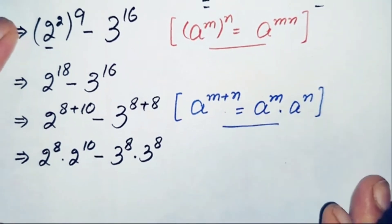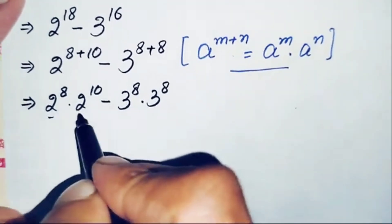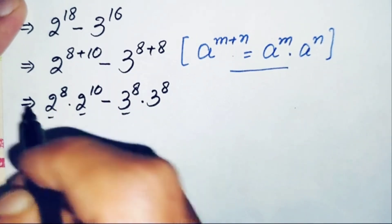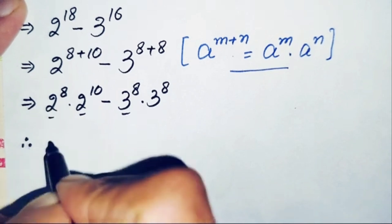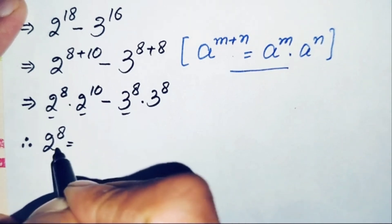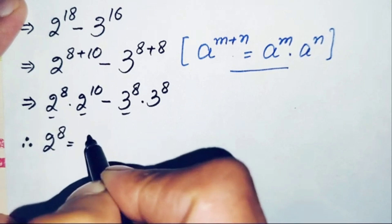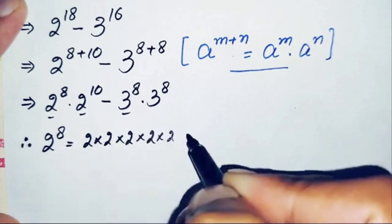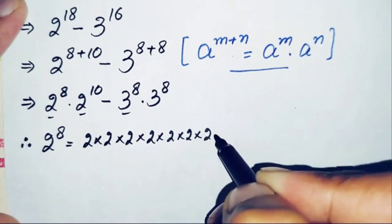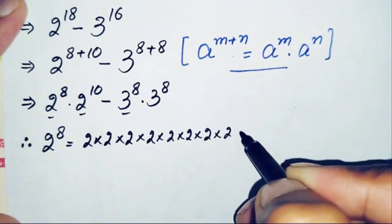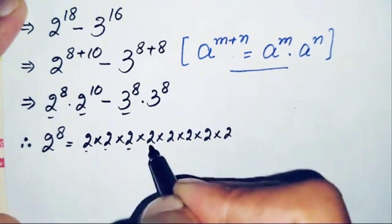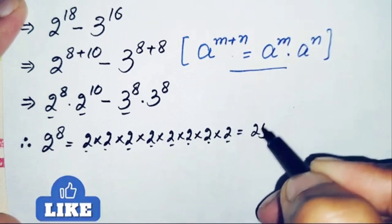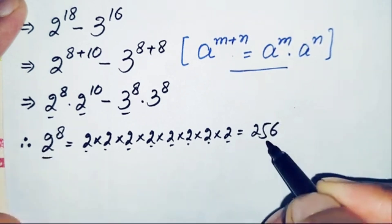Now we find the values of 2 raised to power 8, 2 raised to power 10, and 3 raised to power 8. For 2 raised to power 8, we multiply 2 eight times: 2, 4, 8, 16, 32, 64, 128, 256. So the value of 2 raised to power 8 is 256.